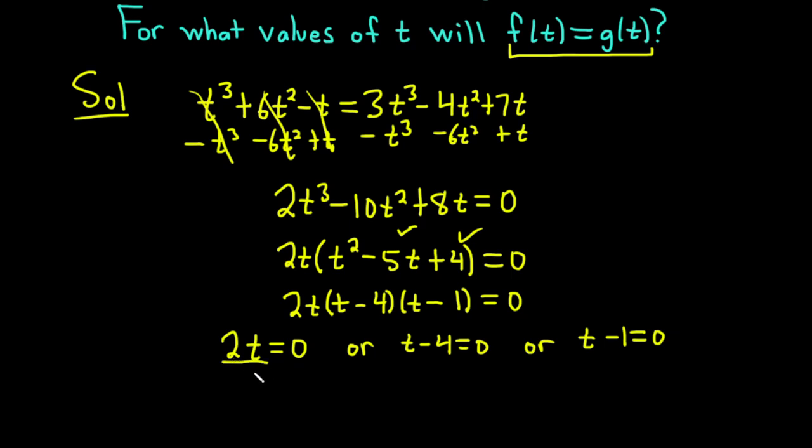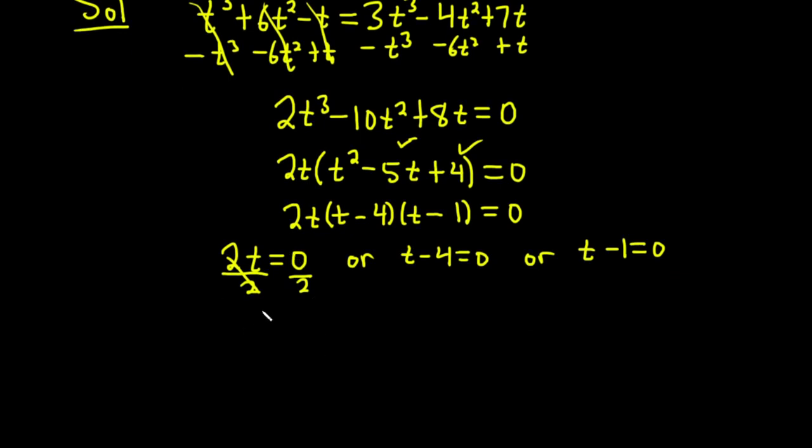This first equation is super easy. We just divide by 2. So we get t equals zero as one of our answers. I'm going to put that in a box.